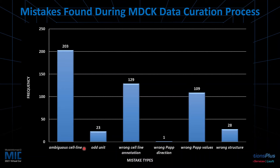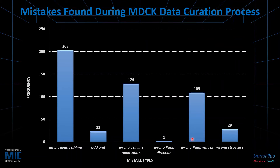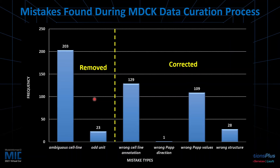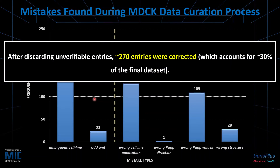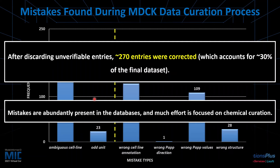This slide shows the frequency and distribution of the types of mistakes we found in the MDCK project. There are a lot of ambiguous cell line information that we couldn't verify, incorrect units — just to show an example from the literature, the unit of permeability is given as per second, when the actual unit should be something like micro centimeters per second or nano centimeters per second. There are also wrong cell line annotations, directions, endpoint values, and structures. In cases where we can't verify the information, we discard the entries. If we can locate and verify that information is incorrect, we retain and correct it. At the end of this data curation process, we corrected about 270 entries, which account for about 30% of the final dataset — a significantly large number. The key point is to emphasize that mistakes are abundantly present in databases, and there should be a lot of effort put into the chemical data curation part of the pipeline.